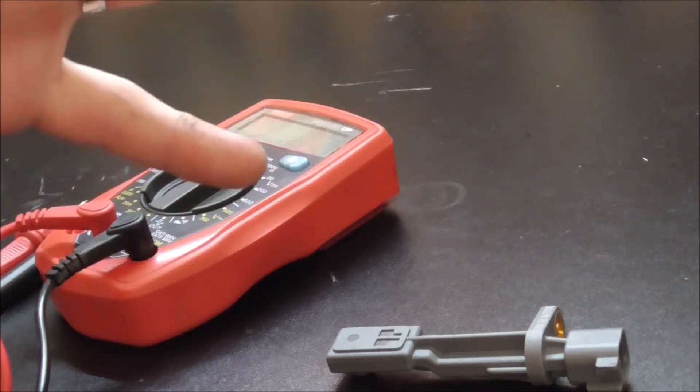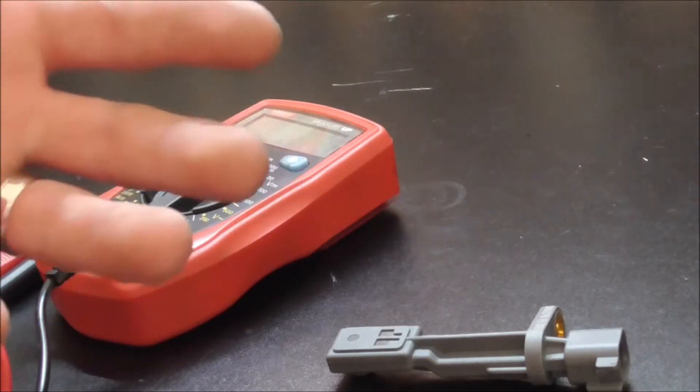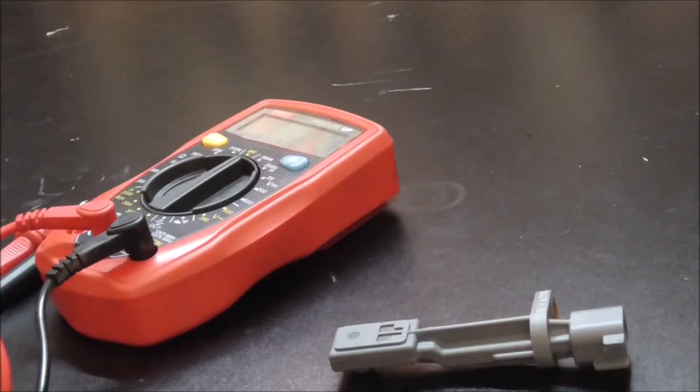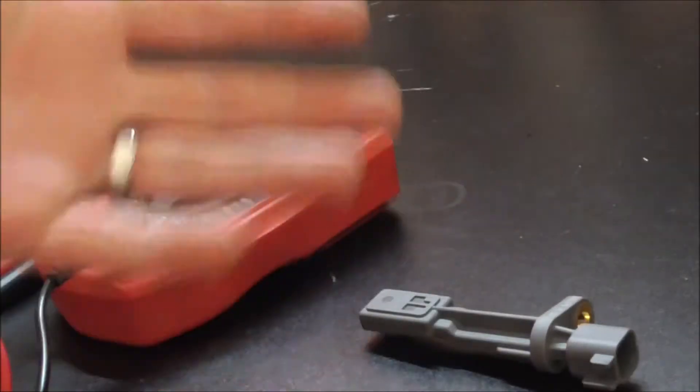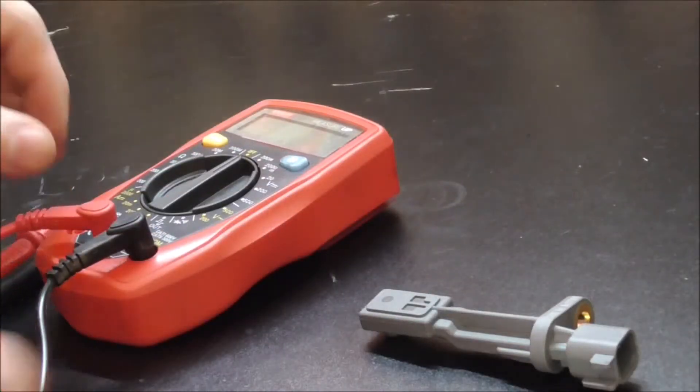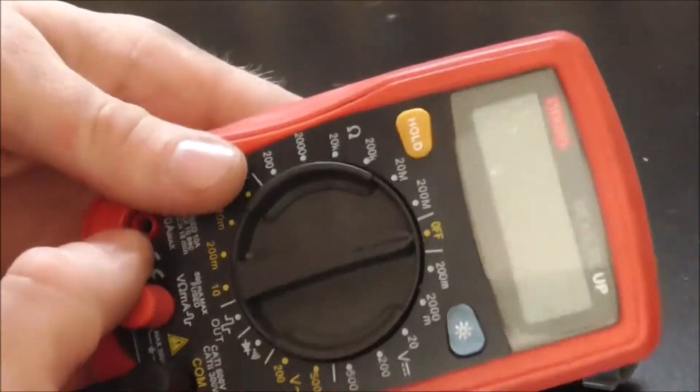There are some things that can test your ABS speed sensors, but they're vehicle specific and look like they're around $100 or so. That's just not something I want to spend money on, so I'm going to show you how to check it with just a multimeter.